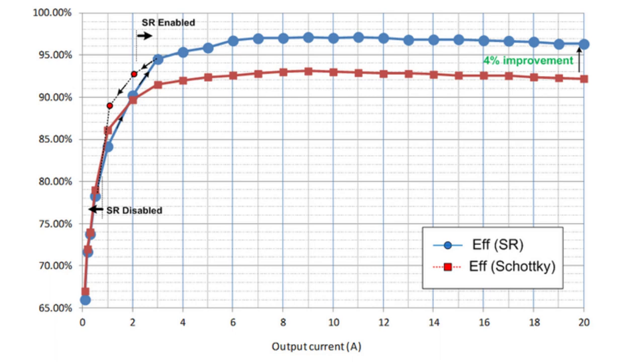This 250W evaluation board offers above 95% efficiency from 20% load condition to 100% load condition. The peak efficiency is 97% at medium load. You can see that the SR operation offers about 4% efficiency improvement compared to the Schottky diode rectification.